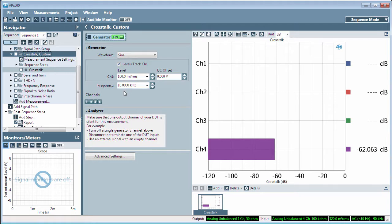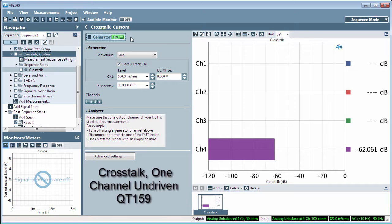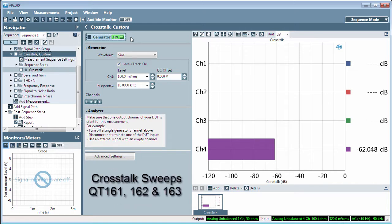There are two more variations of the Crosstalk measurement: Crosstalk one-channel driven in Quick Tip 158, and Crosstalk one-channel undriven in Quick Tip 159. There are also Crosstalk sweeps discussed in Quick Tips 161, 162, and 163.